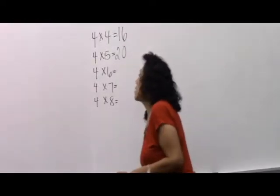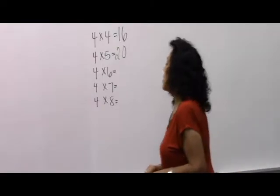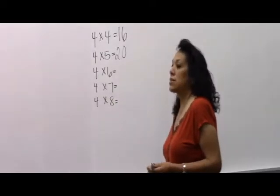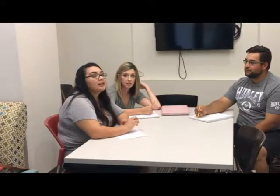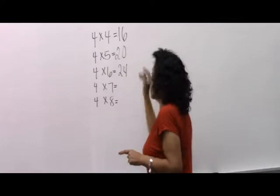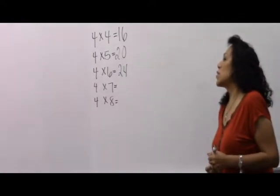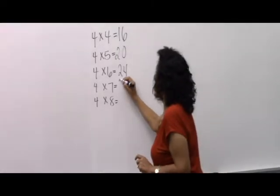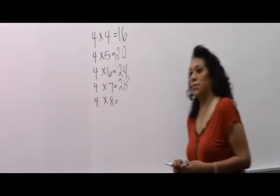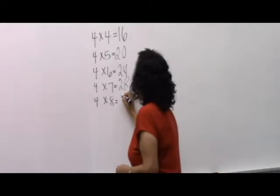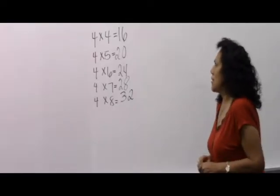I can see y'all have been practicing. Four times six — I'm having a little bit of trouble with it. Louis, can you give her a hand? Four times five plus four — is it 24? Very good, I like the thinking process! Can somebody raise their hand and tell me what four times seven is? Julia? 28! Excellent, y'all have been doing your homework. Last one — four times eight. Louis? 32! I love your enthusiasm.